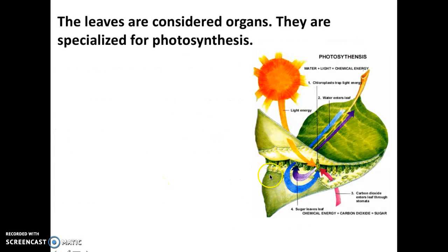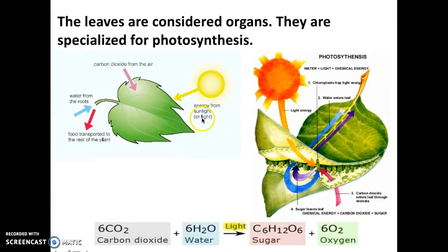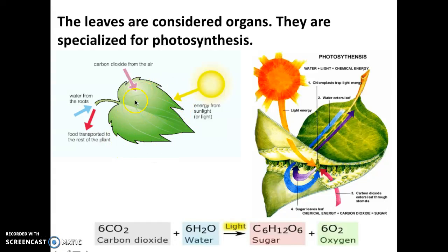Now we're going to talk a little about the leaves. Leaves are basically considered organs for plants, and they are specialized for photosynthesis. All of the different materials required for photosynthesis are going to be used in the leaves. Carbon dioxide is going to be absorbed from the air. Water is going to come in from the roots into the leaf. Energy from the sun or sunlight is going to be absorbed through the leaf as well. That's all going to be used inside of the leaf, inside of the chloroplasts, and that's where photosynthesis takes place — it's all taking place inside of the leaves.